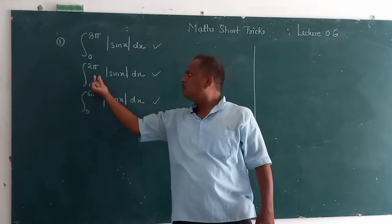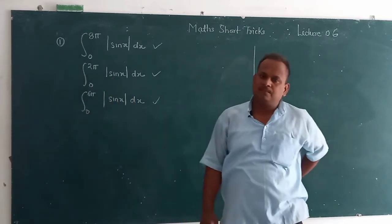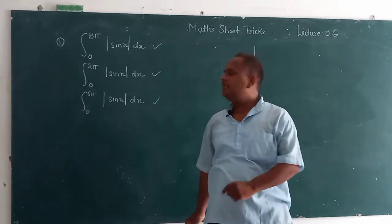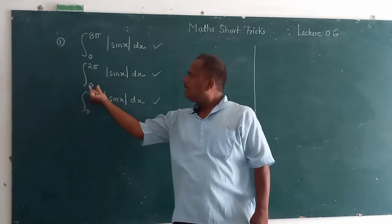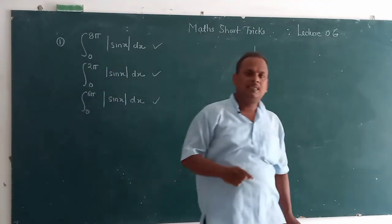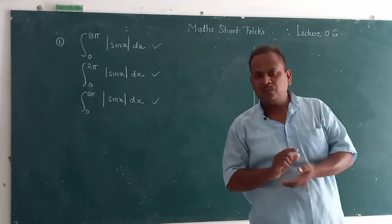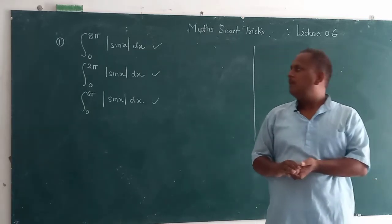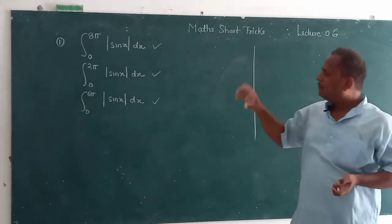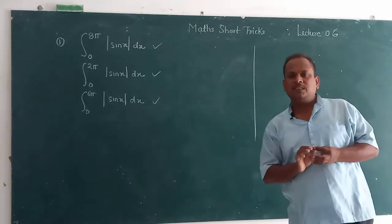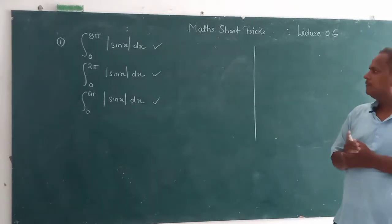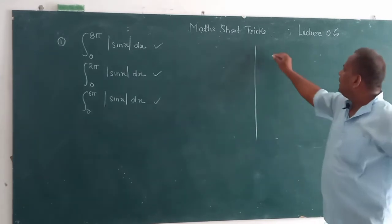लोअर लिमिट 0 यह भी कॉन्स्टेंट है, मतलब जीरो ही रहनी चाहिए। लेकिन यह जो upper limit है, pi term we need to - we have a short trick which we can solve this. Trick what is?